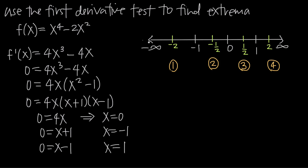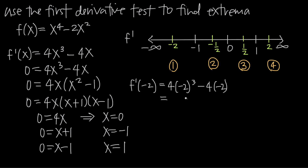It's called the first derivative test because we plug these test values into our first derivative f'(x) = 4x³ - 4x. Starting with x = -2: f'(-2) = 4(-2)³ - 4(-2) = 4(-8) + 8 = -32 + 8 = -24.